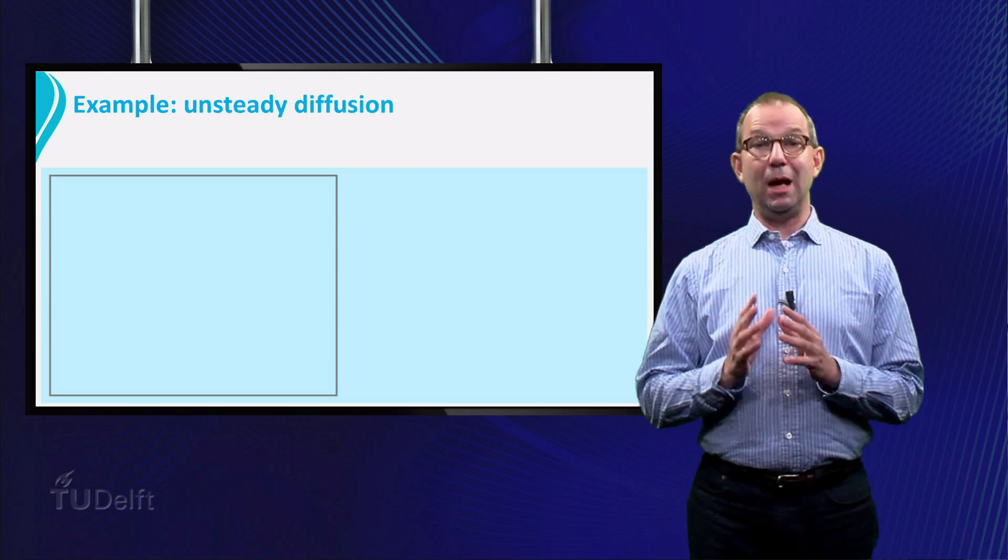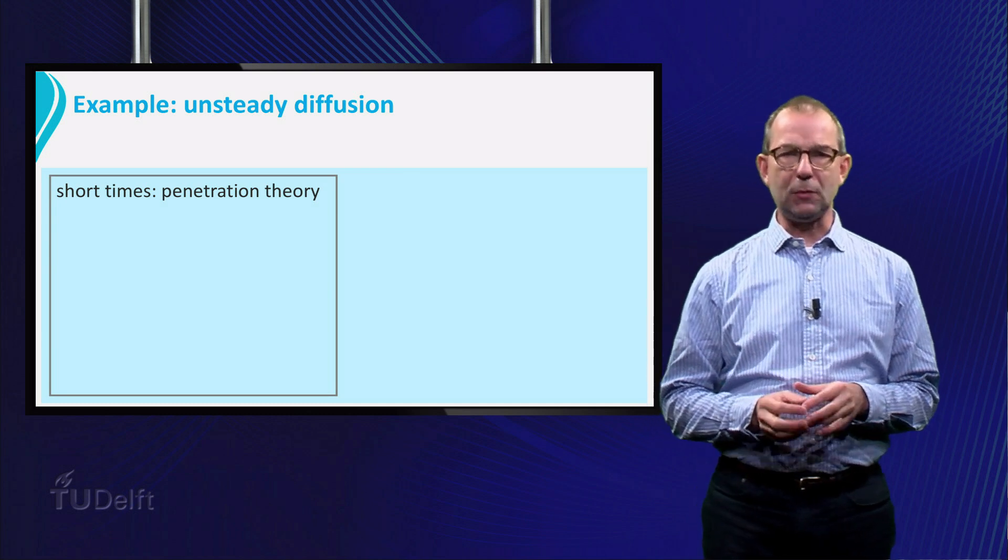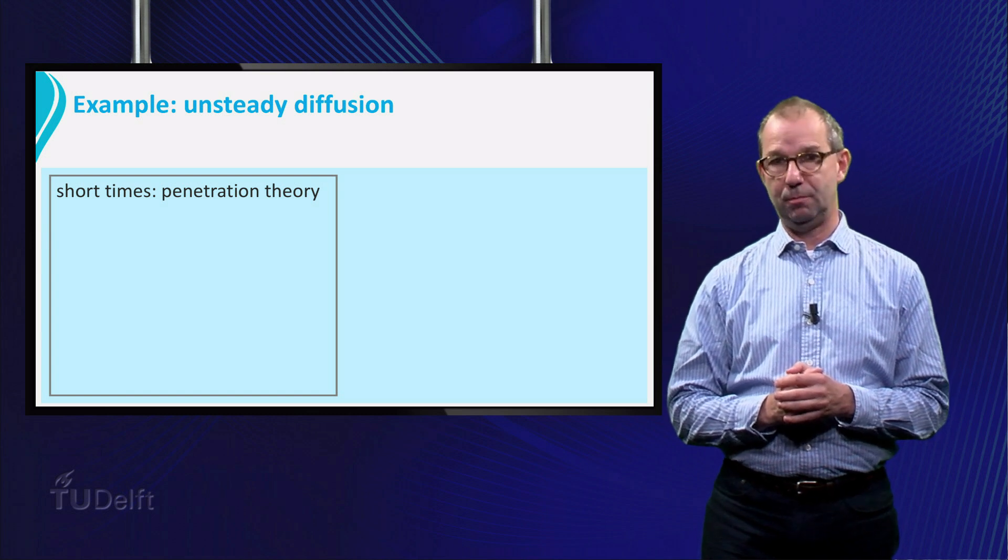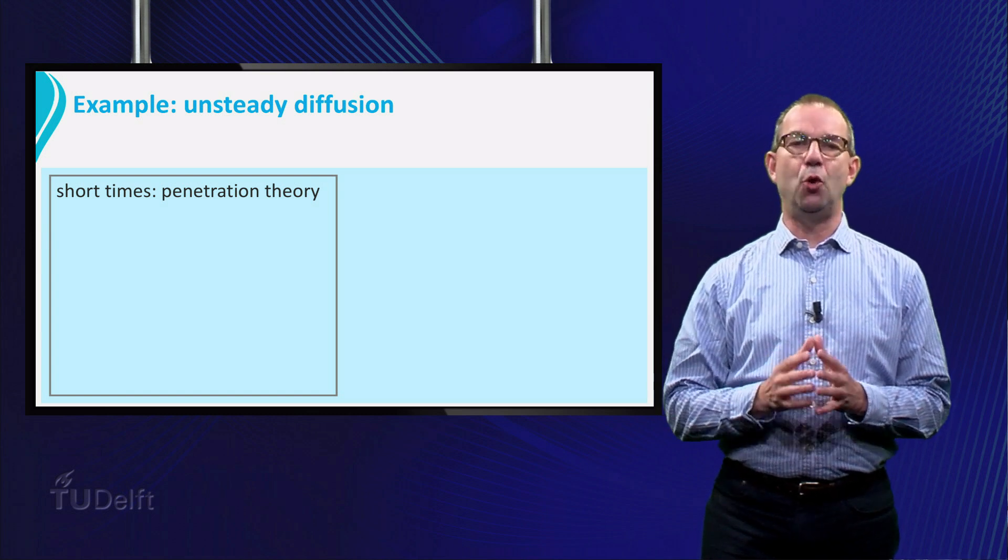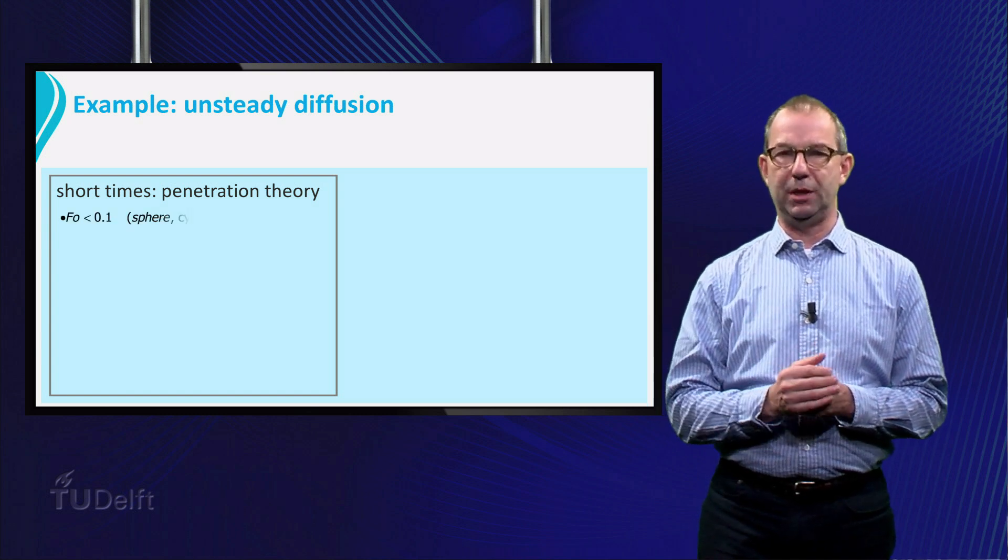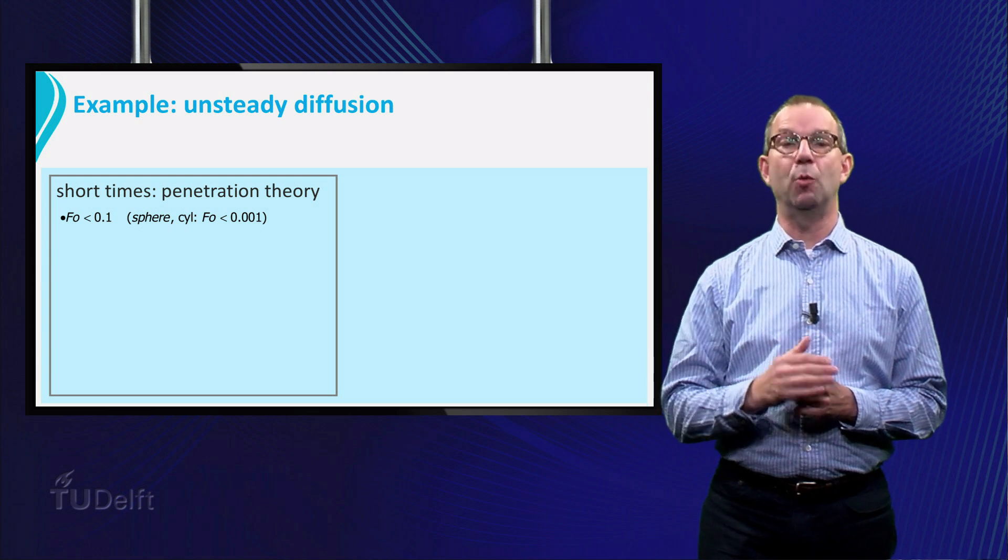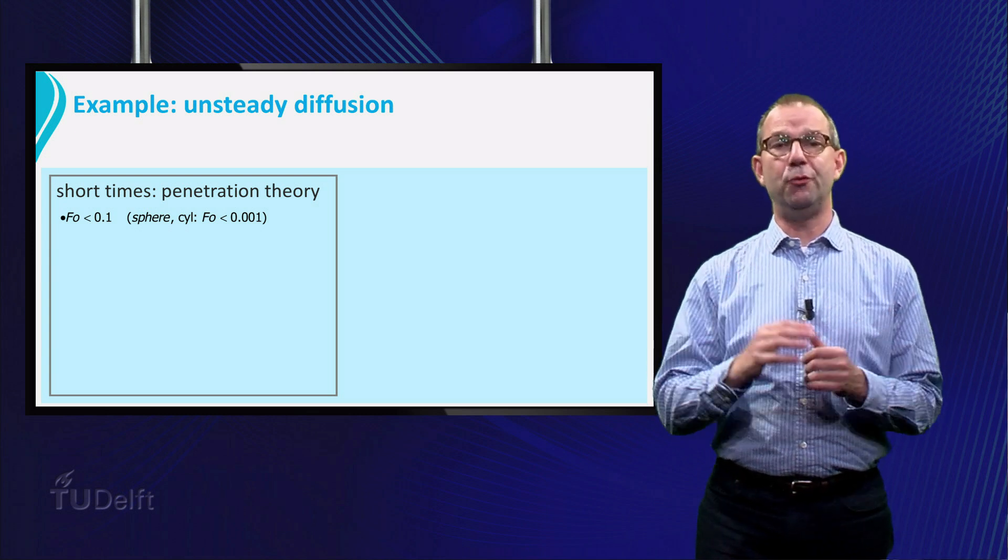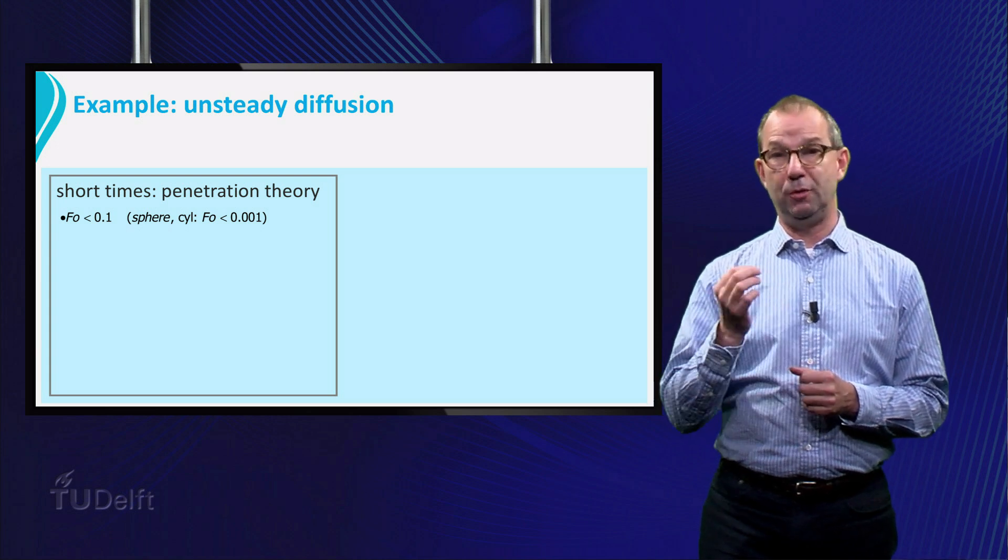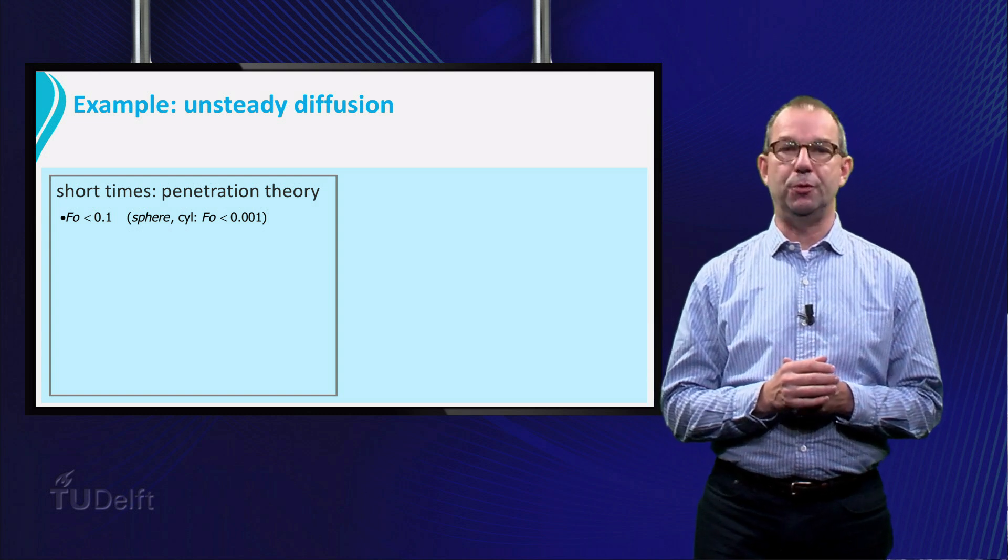Also, for unsteady diffusion we have a very strong analogy. Do you remember the analysis for unsteady heat conduction for short times? Then we could formulate our findings in terms of the penetration theory. It was valid for Fourier smaller than 0.1. That is also true for mass transfer. But the Fourier number gets defined with the diffusion coefficient D rather than A as we did for heat transfer.